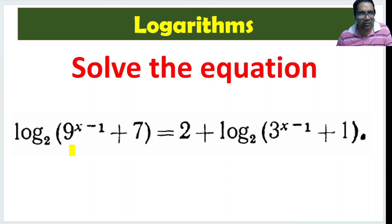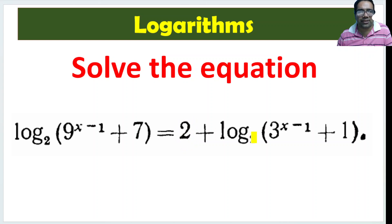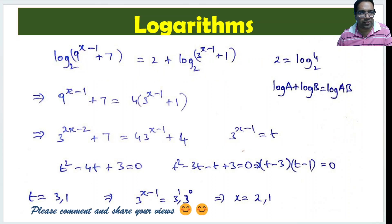Here, everything is to base 2 except the constant 2 on the right-hand side. If we convert that 2 also to base 2, then using log a plus log b equals log(ab), we can equate both sides. Let us see how to do this.